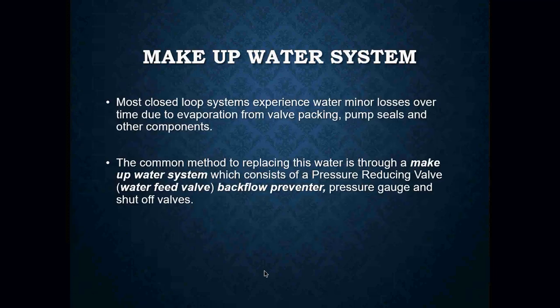Most closed-loop systems experience water loss over time through evaporation, from valve packings, pump seals, and other components. We need some way to make up that lost water. The common method is through a make-up water valve or make-up water system, which consists of a pressure reducing valve — better known as your water feed valve — a backflow preventer, a pressure gauge, and a shut-off valve.